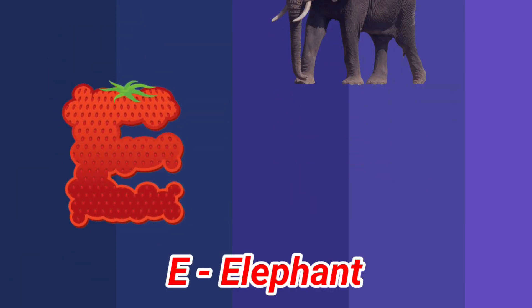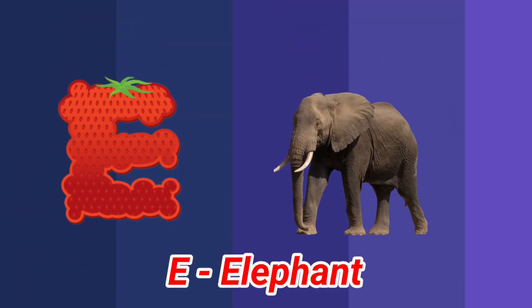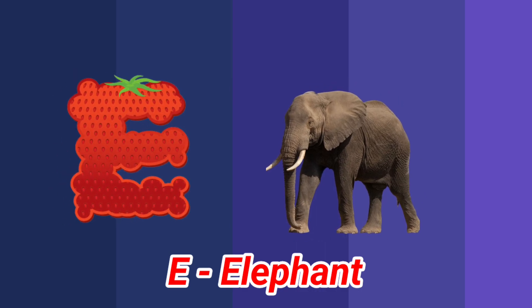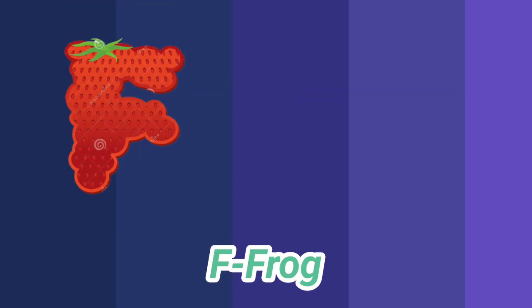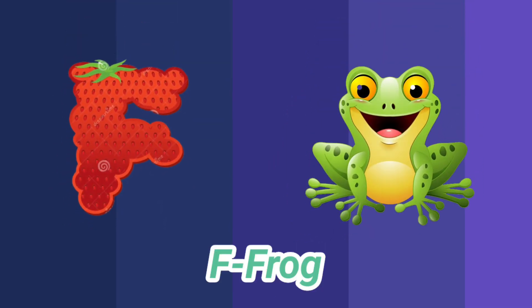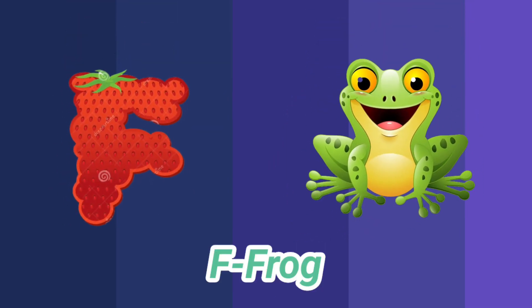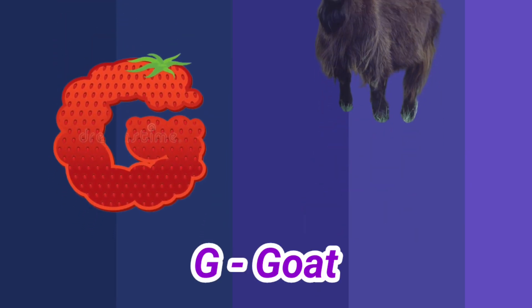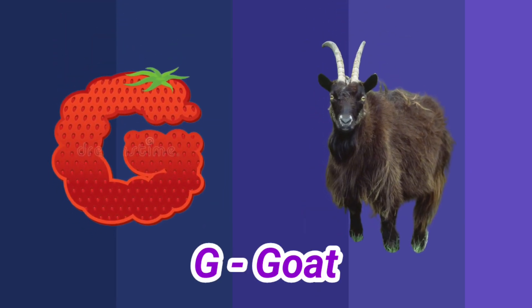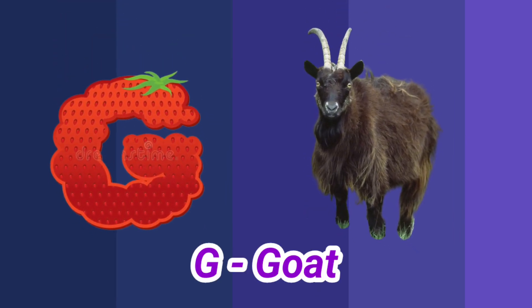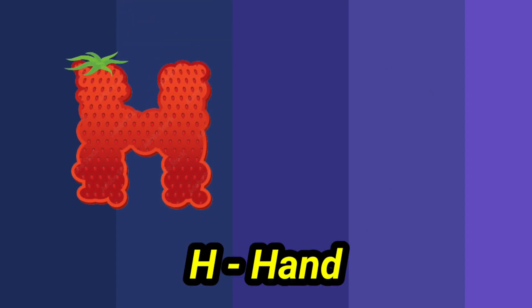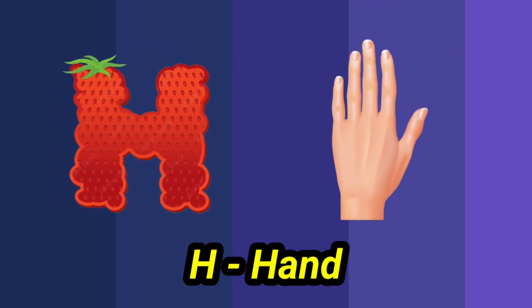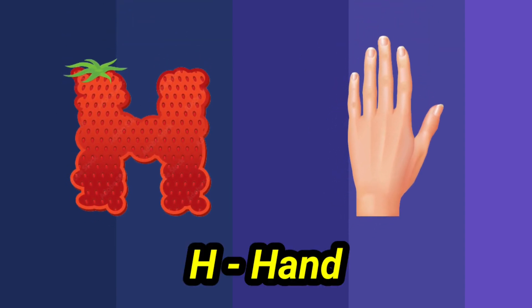E is for elephant, e-e-elephant. F is for frog, f-f-frog. G is for goat, g-g-goat. H is for hand, h-h-hand.